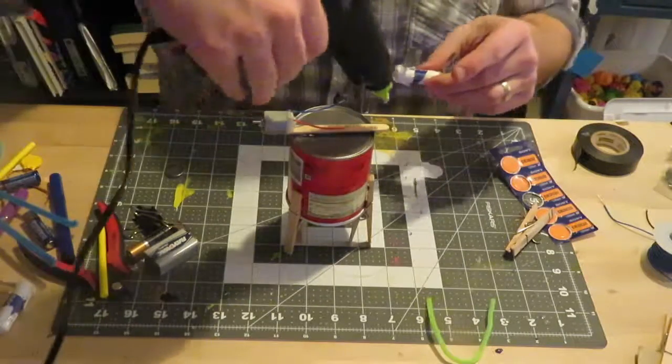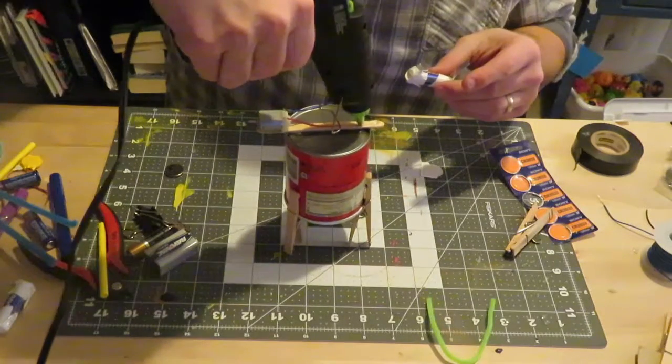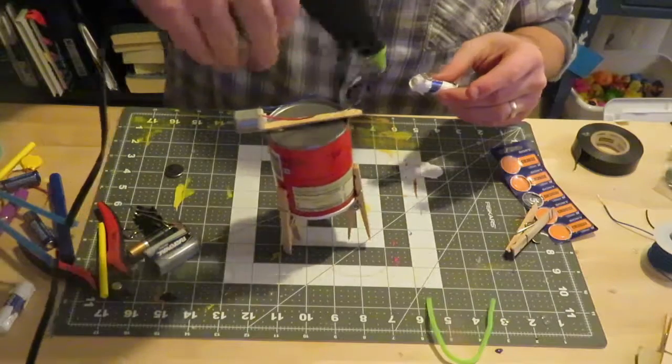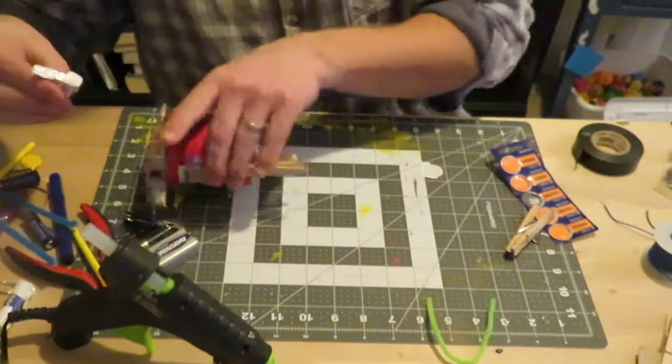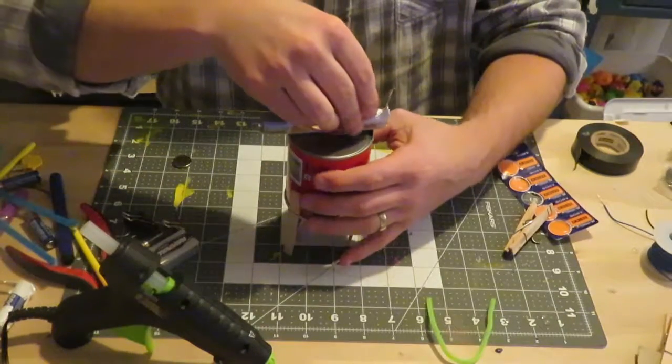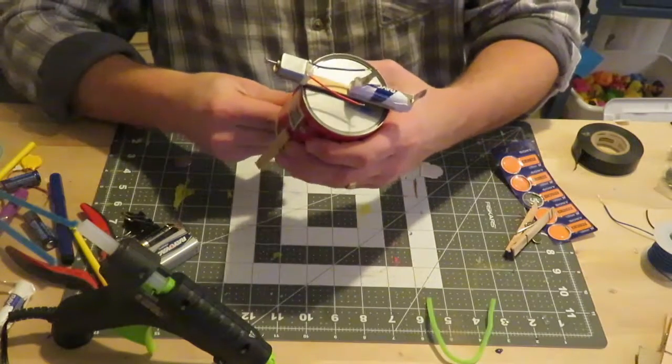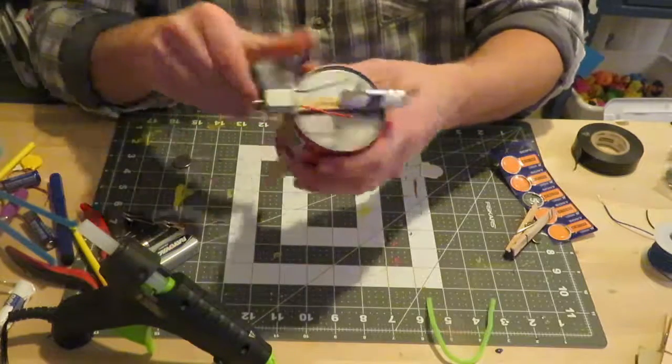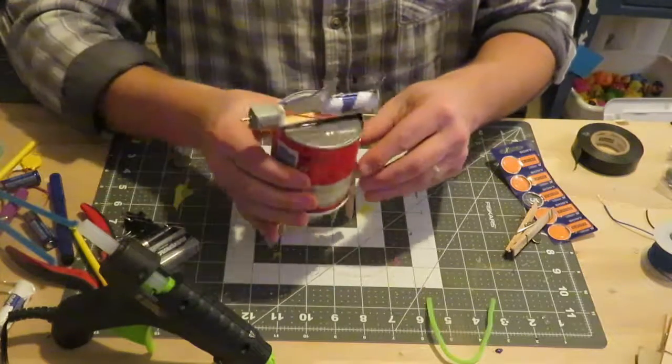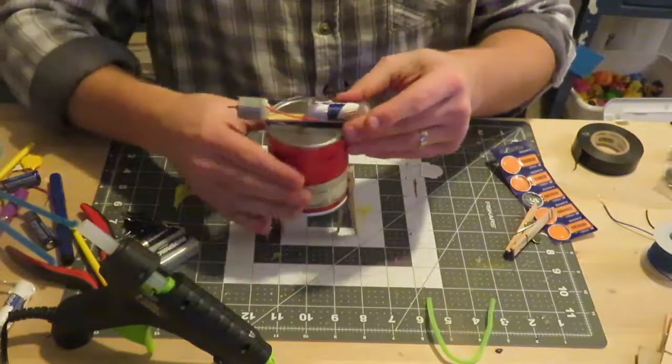I'm actually just going to use some hot glue just for the time sake of this video. It's falling over. So this is why I probably think I didn't permanently place my legs yet so I get the weight balance to figure it out just right.